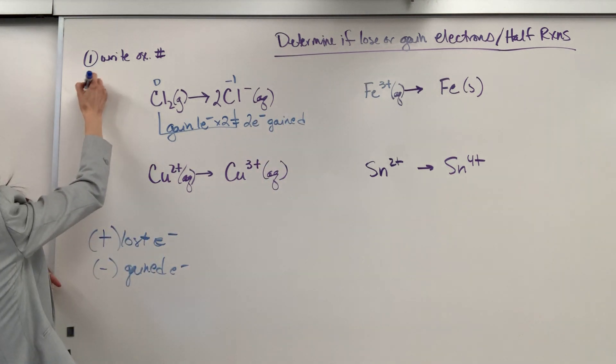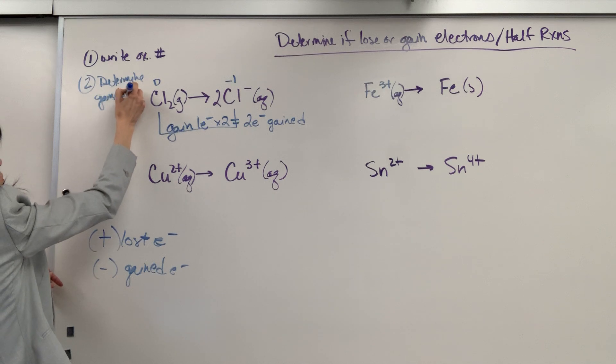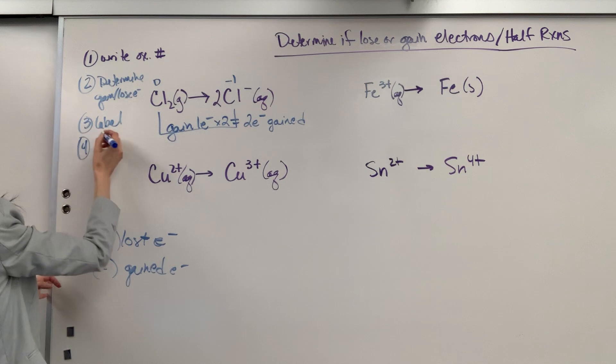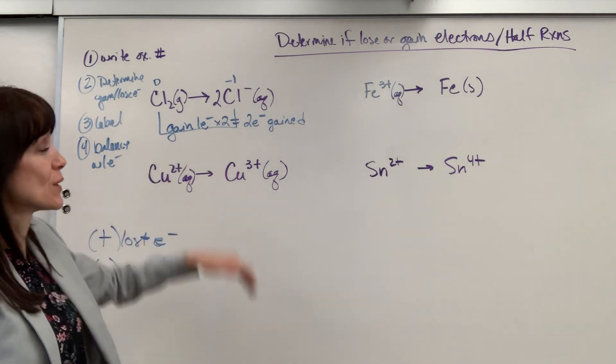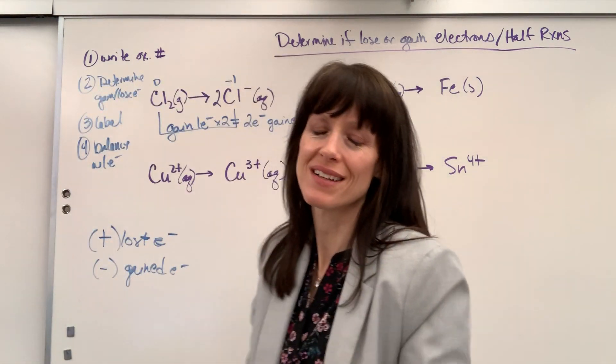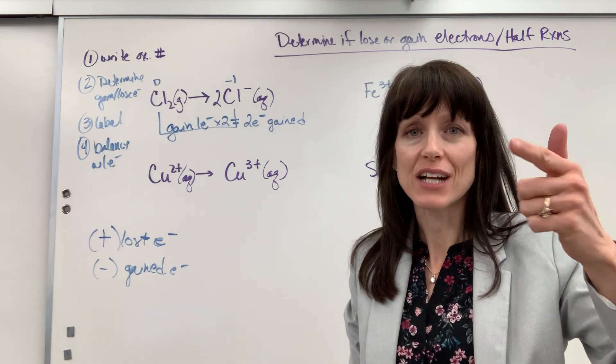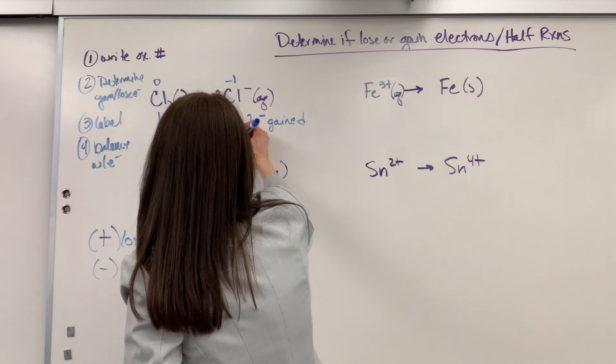So number two, you're going to determine if we gain or lose electrons. And number three, label. Number four is balance with electrons. Okay, so gain electrons. Go to our little saying. Leo's alliance has ger. Ger. Gain electrons. Reduction. So this is reduction.